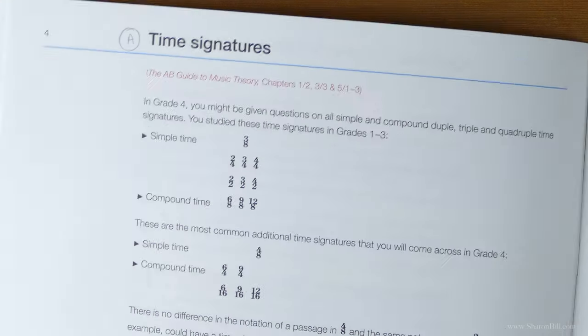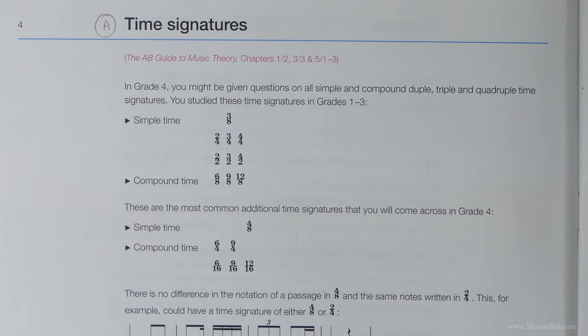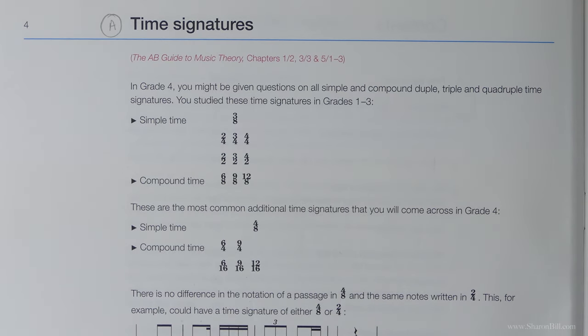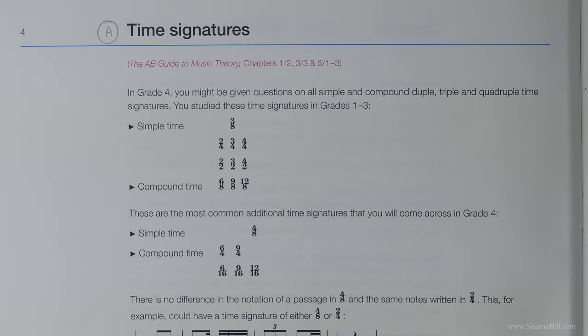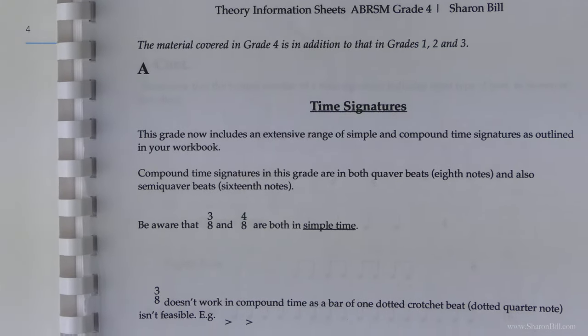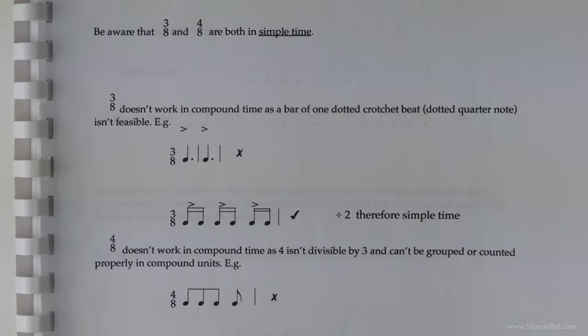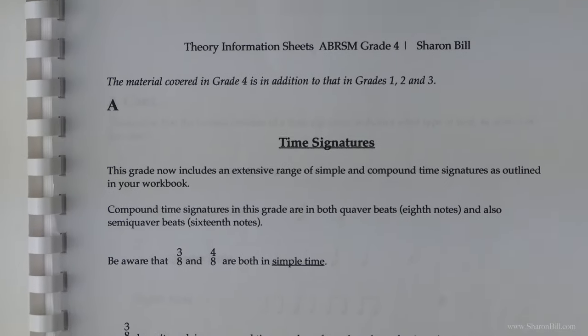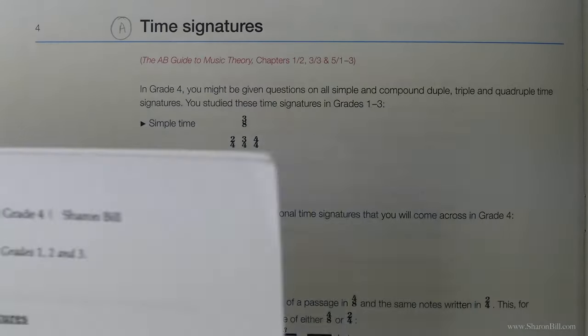For example, if you open your workbook up, the first exercise is introducing some new time signatures. I've referred to this in the videos, and the book here is Section A, and the PDF document has Section A, and all of the information that you need for that section can be found there, and that continues throughout the book.